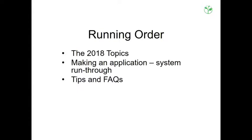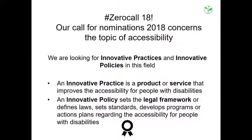The running order: firstly we're going to take you through the 2018 topics — this year it's accessibility, and we'll delve into each of the different areas a little bit deeper. Then we're going to go through making an application from start to finish, and then we'll take you through some tips and frequently asked questions. Throughout, we'll try to answer your questions in the chat function.